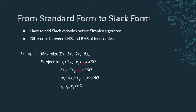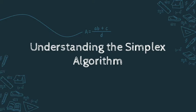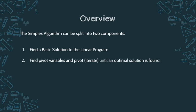Now that we've looked at the background of slack variables and standard form, let's dive into what the simplex algorithm actually is. The simplex algorithm can be split into two primary components: first, finding a basic solution to the given linear program, and after that, finding pivot variables and using those variables to pivot or iterate until an optimal solution is found.